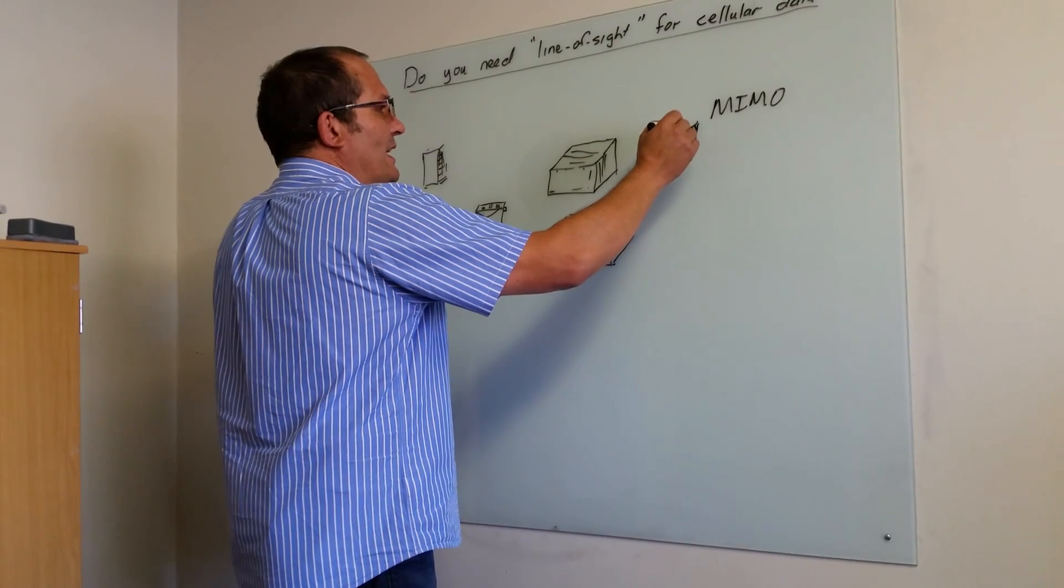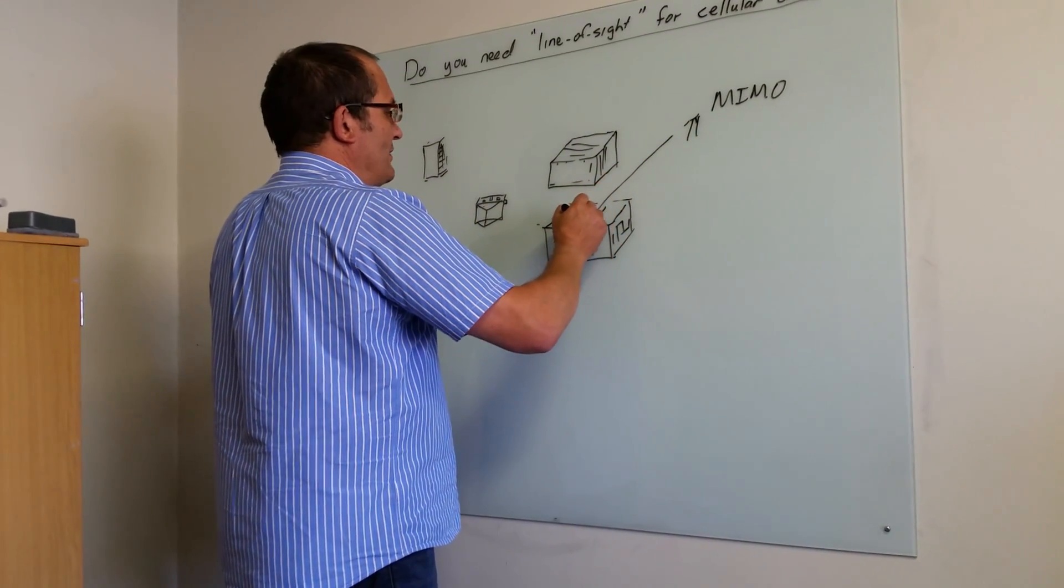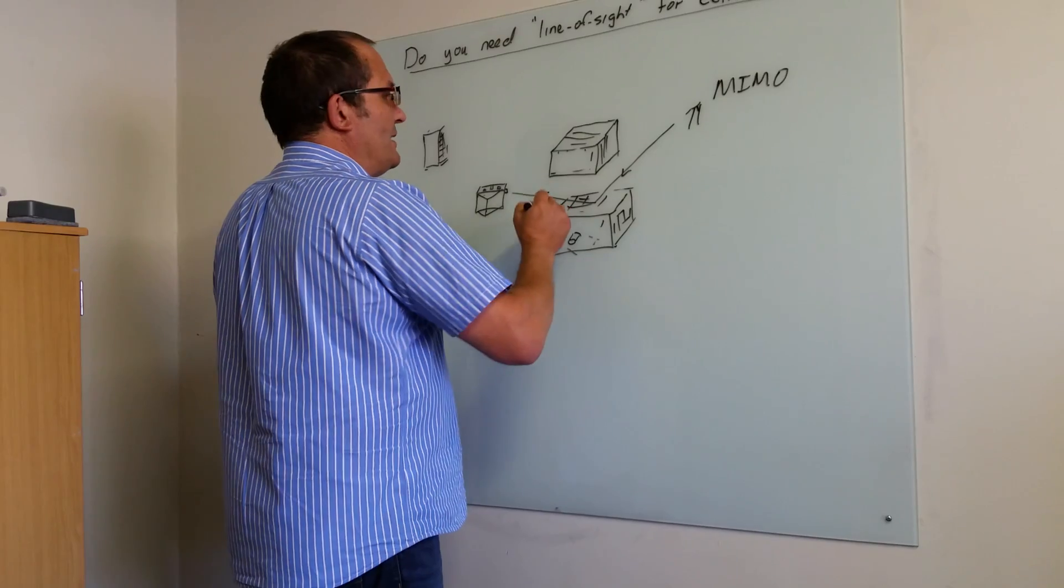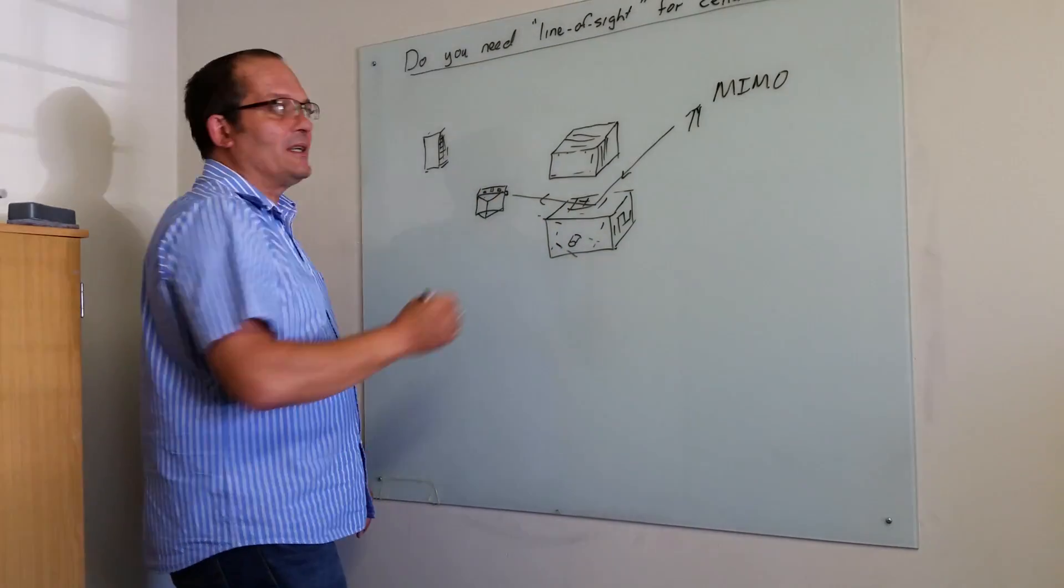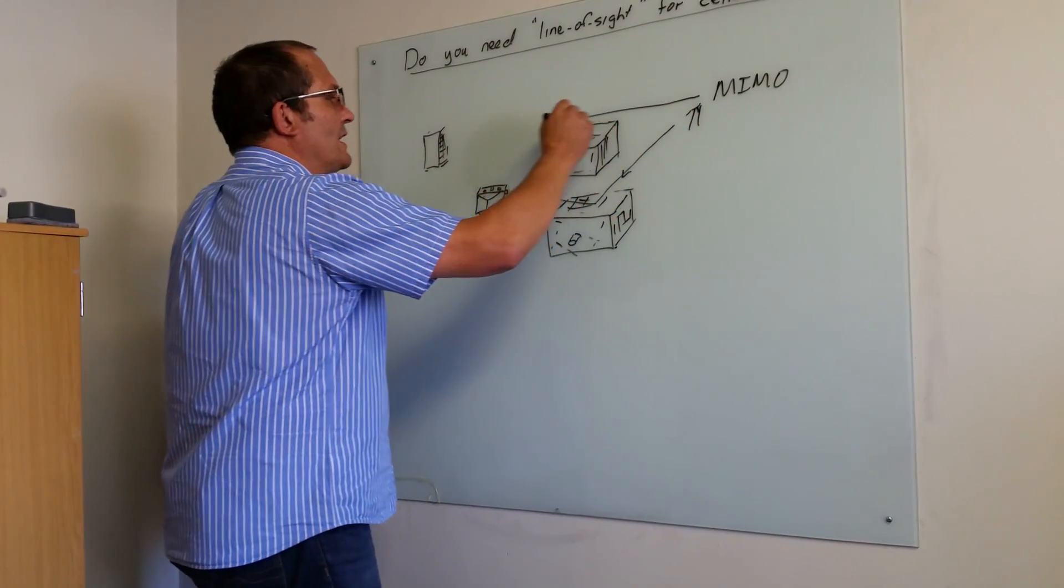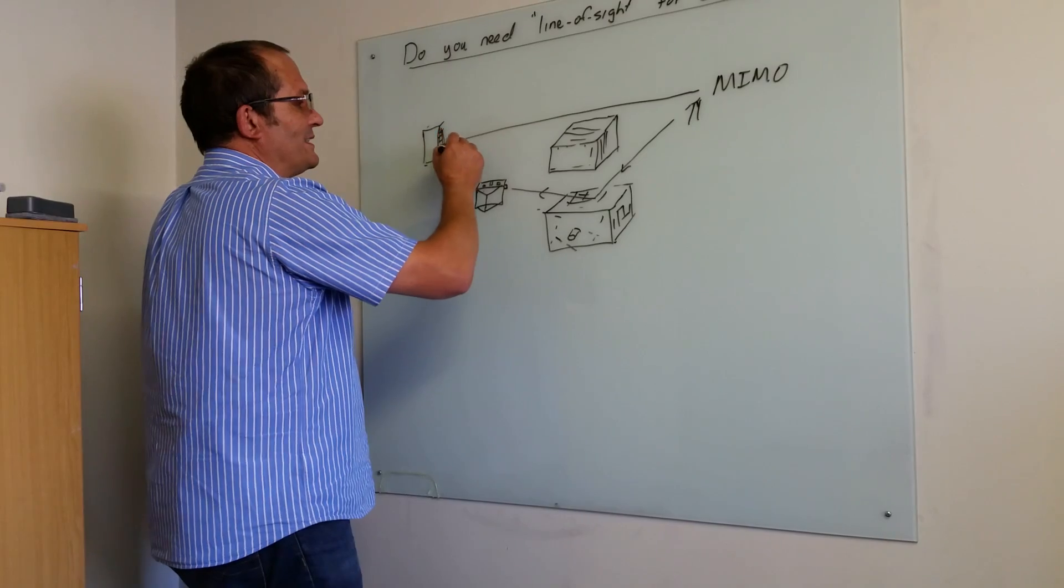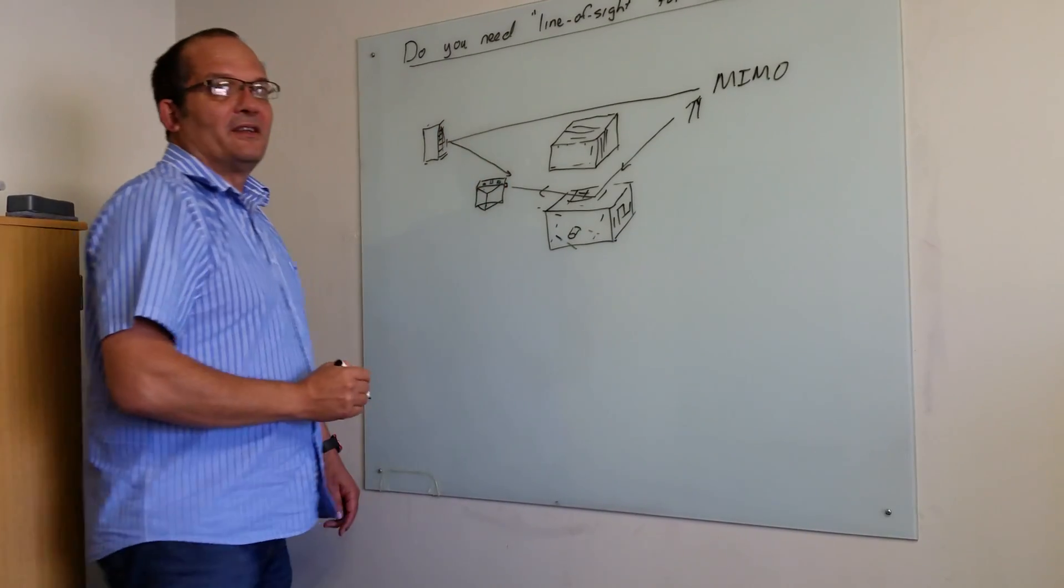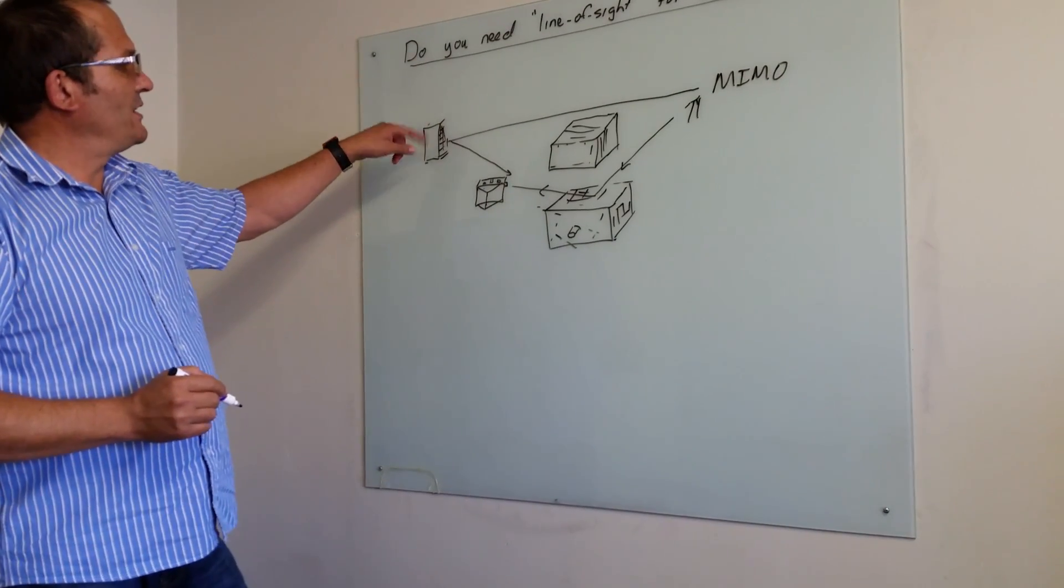What will happen in reality is that you'll get some signal travelling here, it will reflect off there, and you'll get a bit of data. In another case, you'll get another signal, the signal will still go like this, and it'll go this way, and perhaps reflect off another building.